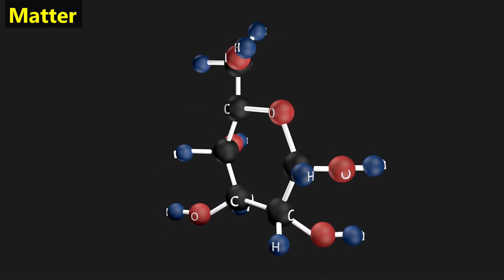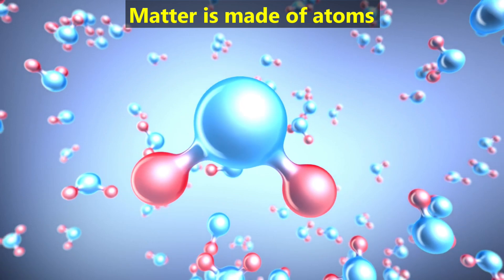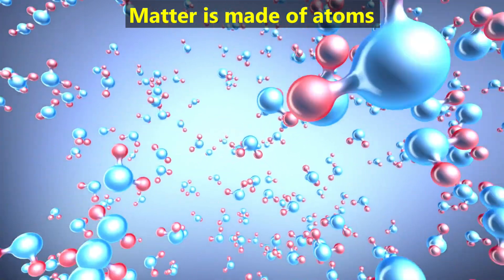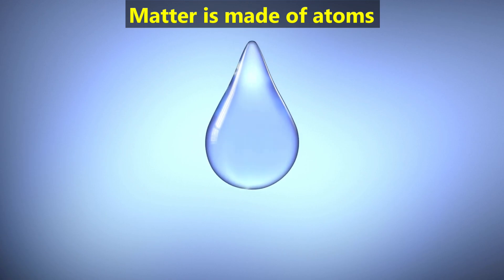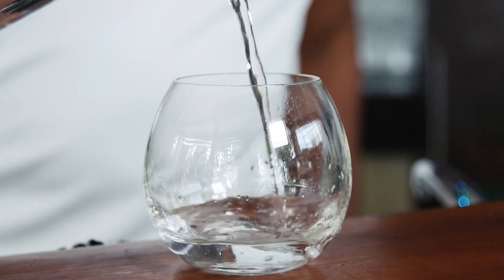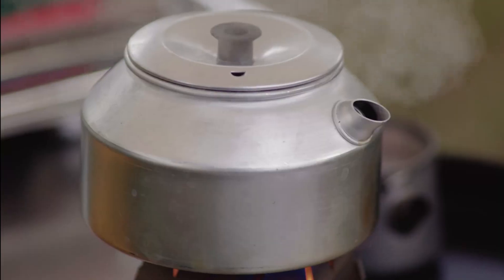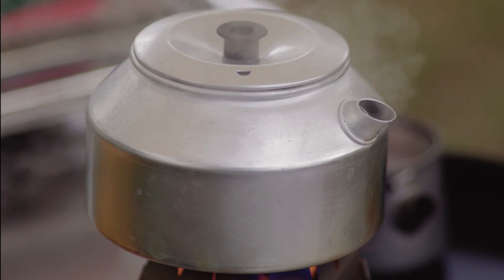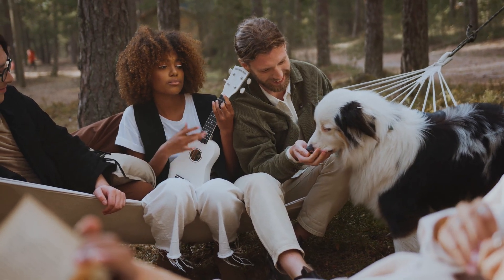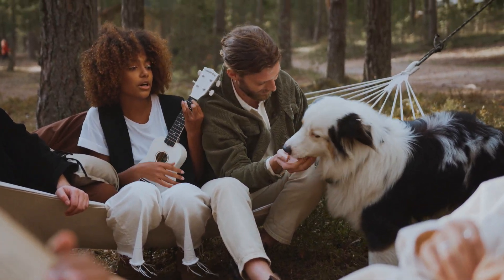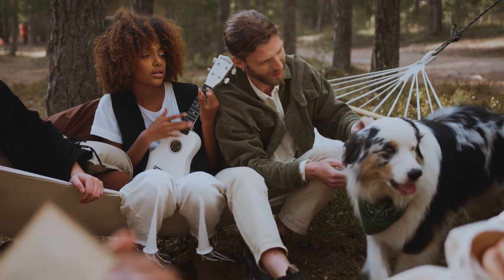We'll start with the word matter. Matter is made of tiny particles called atoms. This drop of water is made of many atoms that are too small for us to see individually. Matter can be in many states. For example, here's water in the solid state, which we commonly call ice. Here's water in the liquid state, and here's water in the gas state, which we commonly call steam. Likewise, everything we touch from furniture to furry pets are examples of matter. We're made of matter, too.